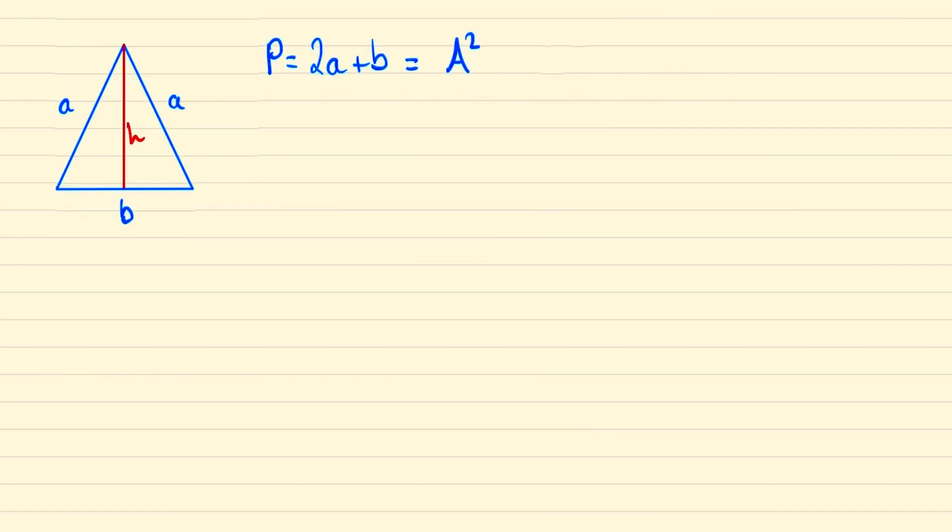We can begin this problem by setting up the following diagram and to work out the area we can use that it's a half base times height. Since we're squaring this, then we're looking for a quarter of b squared times h squared.